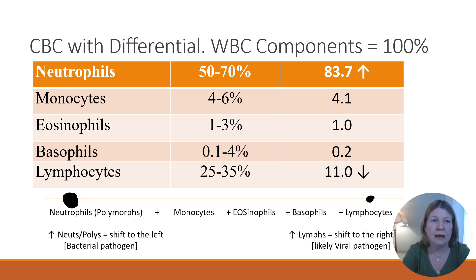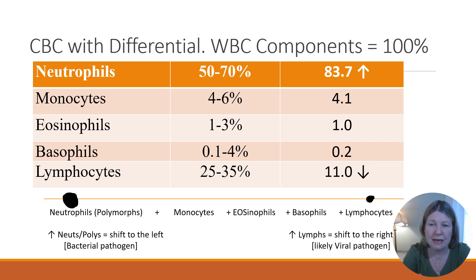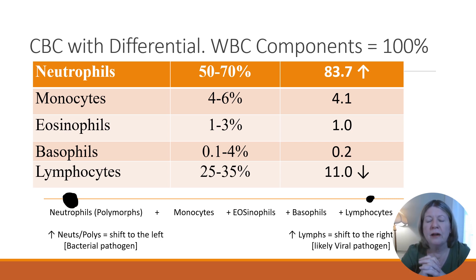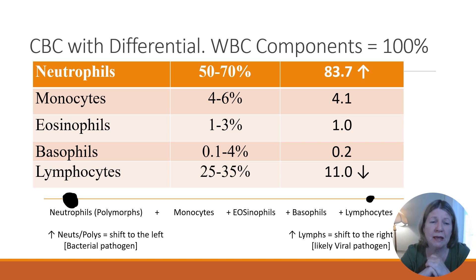Let's do one more. CBC with differential: here's a client where the white blood cells were elevated. The neutrophils came back at 83.7%. Monocytes, eosinophils, and basophils were within normal range, and the lymphocytes were low — because this is a differential adding up to 100%, the neutrophils must take from elsewhere. With neutrophils on the left and lymphocytes on the right, this elevation of 83.7% exceeds the 70% high range of normal by 13.7%, indicating a shift to the left and likely a bacterial pathogen.